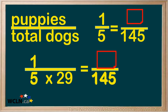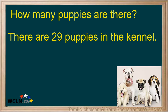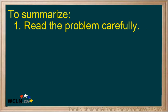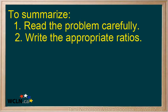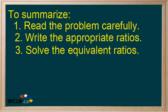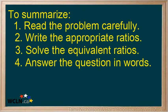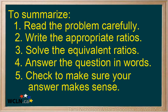Since you multiply 5 by 29 to get 145, you will multiply 1 by 29. The answer will be 29 puppies at the kennel. In summary, the steps to solving a ratio problem are: read the problem carefully, notice what ratios you are given and match them to the question, write the appropriate ratios, solve the equivalent ratios, answer the question in words, and check to make sure your answer makes sense.